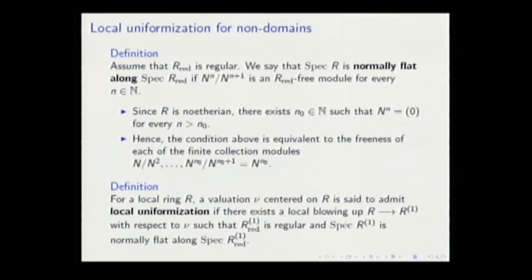Now we can state what local uniformization means in this context. For such a ring, a valuation is said to admit local uniformization if there is a blowing up of that form such that not only R_red is regular after blowing up, but also this normal flatness condition holds.